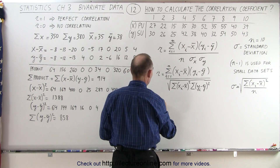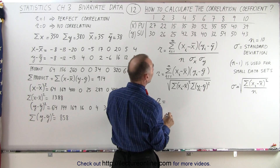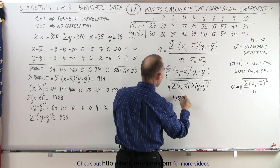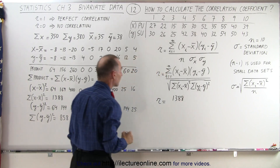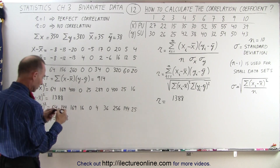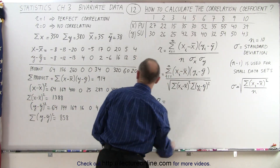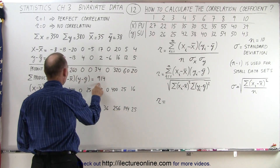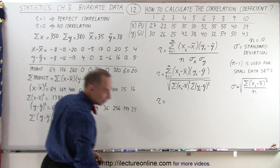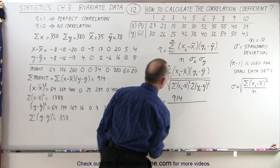We can now start filling in our formula. The r value — the correlation coefficient — has 914 in the numerator. That value of 914 is the sum of all the products of the paired differences.